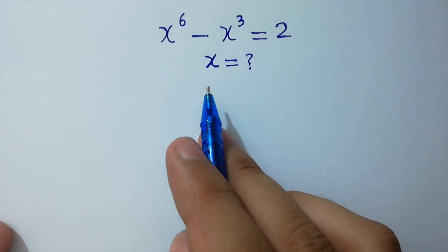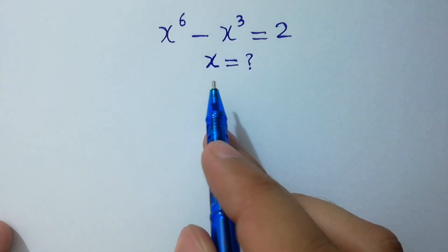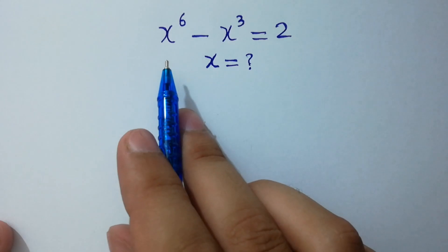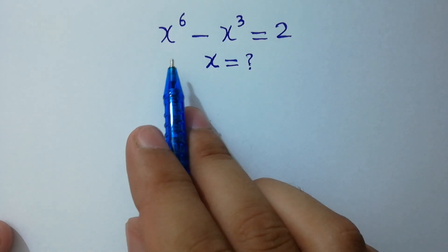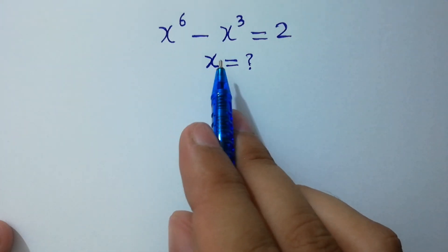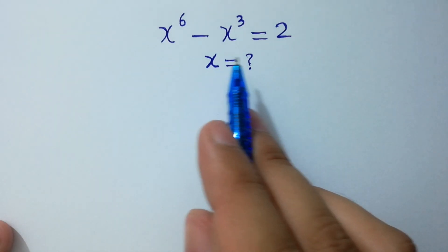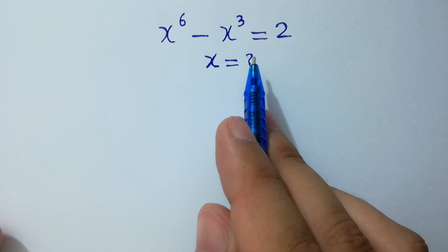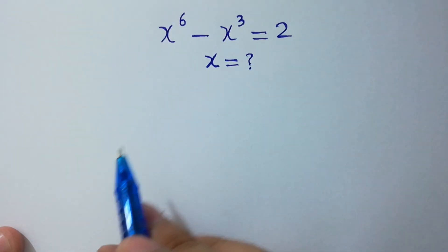Hello friends. Find the value of x if x to the power 6 minus x cube equals 2. Let's solve it.